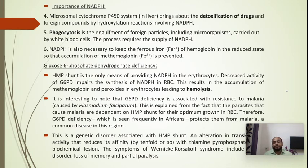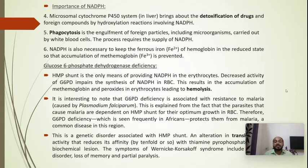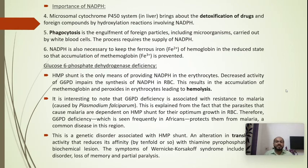Finally, a genetic disorder associated with HMP shunt involves the transketolase enzyme during the non-oxidative phase. Any alteration in transketolase activity reduces the affinity of the enzyme towards thiamine pyrophosphate, leading to a disease named Wernicke-Korsakoff syndrome, which includes mental disorder, loss of memory, and partial paralysis. These are the important clinical points related to the deficiency of glucose-6-phosphate dehydrogenase, the regulating enzyme of the pentose phosphate pathway.